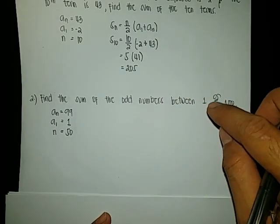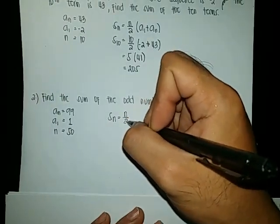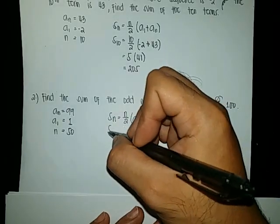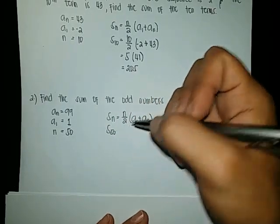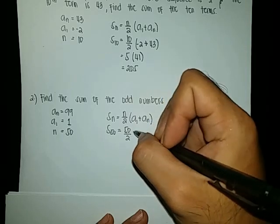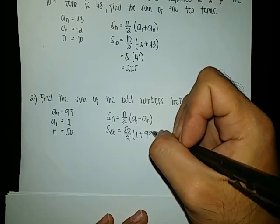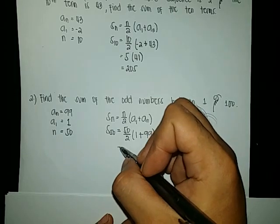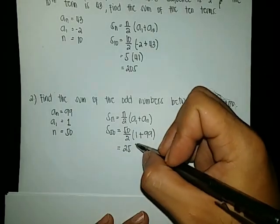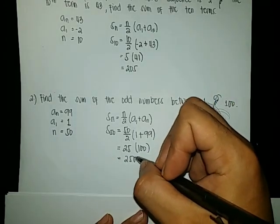Now let us compute the arithmetic series using the formula: S sub n equals n over 2 times the quantity of A sub 1 plus A sub n. The sum of the 50 terms equals 50 over 2, times the quantity of 1 plus 99. Simplifying: 50 divided by 2 is 25, and 1 plus 99 is 100. So 25 times 100 equals 2,500.